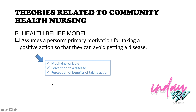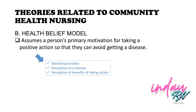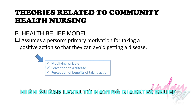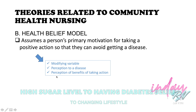In the Health Belief Model, positive action involves three modifying variables. For a patient with high blood sugar, they could modify their lifestyle — reducing sugar consumption or doing exercises. These are the modifying variables: changing lifestyle, diet, and exercise habits. Additionally, the patient needs to think about the susceptibility to disease, such as developing diabetes mellitus, which leads to a perception of benefits of taking action and motivates them to modify their lifestyle.